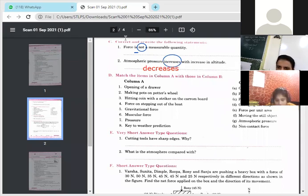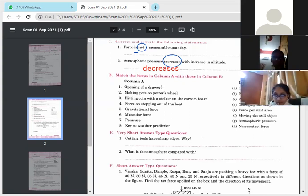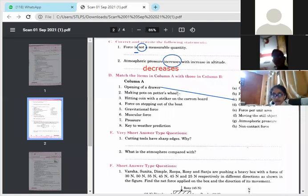Next, options are there with you. Match the items in column A and B. Opening a drawer. Opening a drawer, what do you do? Push or pull? Yes, tell me. Either you pull or push. Speak out. Pull. Pull. You pull. Making pots on the potter's wheel. Changes the shape. Changes the shape.